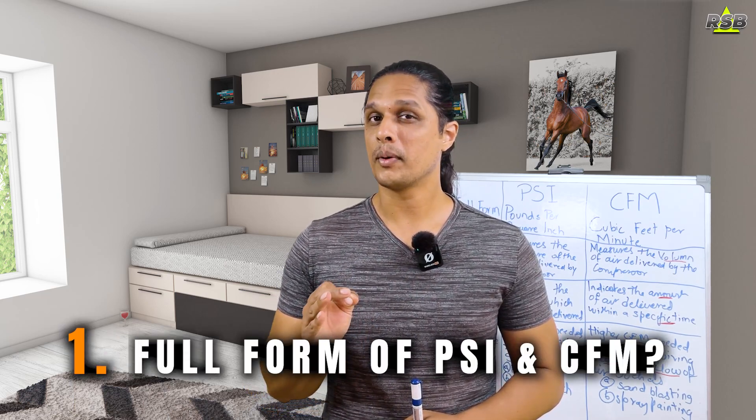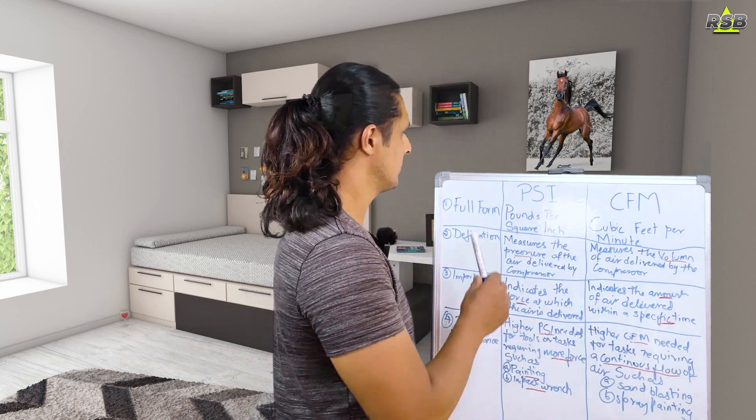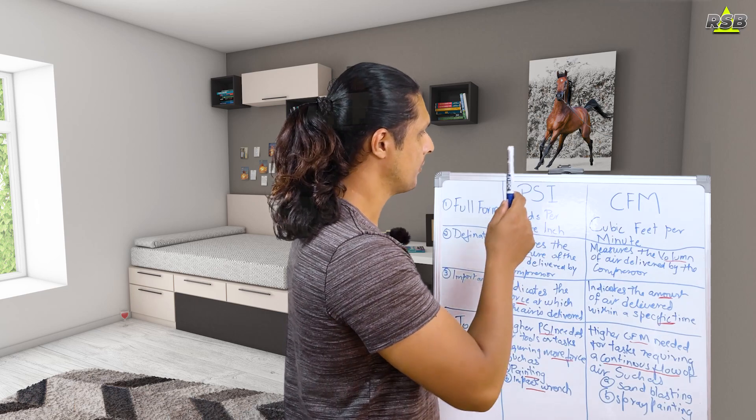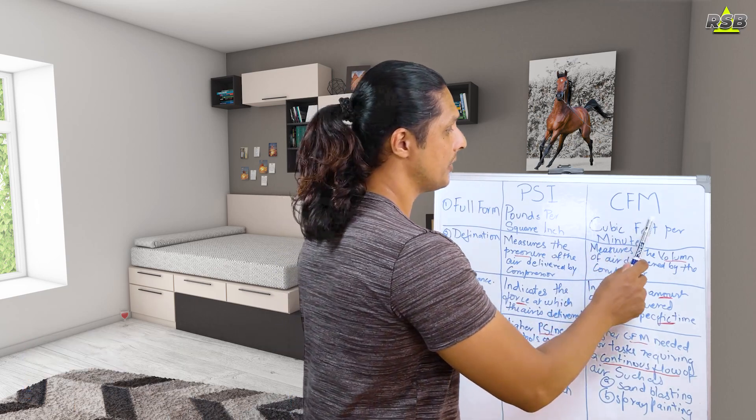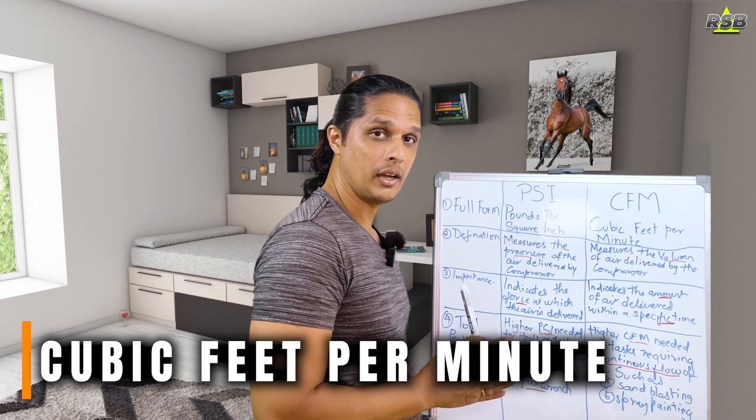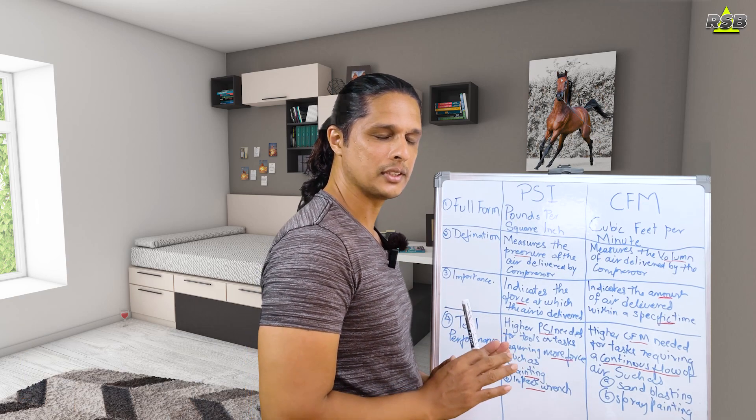In this video I will show you eight points covering what the difference is and what the meaning of CFM and PSI are. I have a column set up on the board with the first four points. So the first point we should know is the full form of PSI and CFM. The full form of PSI is Pounds Per Square Inch, and the full form of CFM is Cubic Feet Per Minute.